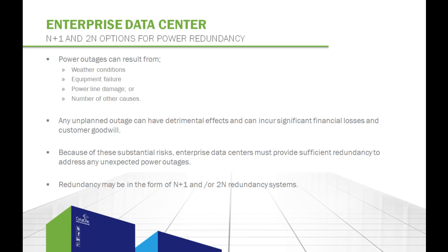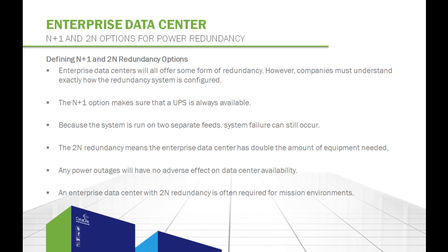Redundancy comes in different forms. For example, data centers may offer N plus 1 and/or 2N redundancy systems. Enterprise data centers will all offer some form of redundancy; however, companies need to understand exactly how the redundancy system is configured. Also called parallel redundancy, the N plus 1 option makes sure a UPS is always available. N represents the number of UPS modules required to deliver the necessary amount of power for data center operations, and the plus 1 refers to one extra UPS module. This type of configuration is not a fully redundant system, because the system is run on two separate feeds, and system failures can still occur.